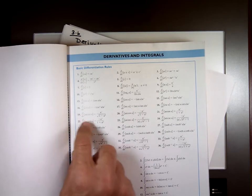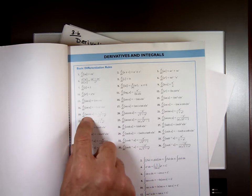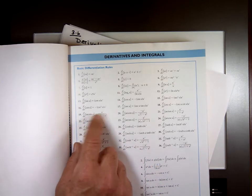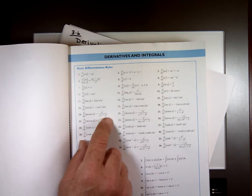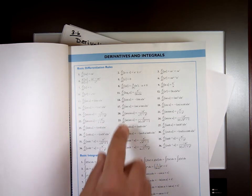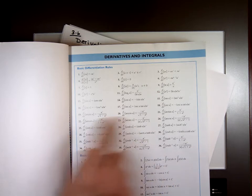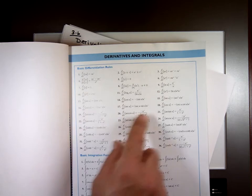The derivative of arc sine is equal to arc sine of u. It's u prime over the square root of 1 minus u squared. The derivative of arc cosine of u, just like arc sine, the only difference, the top is negative.